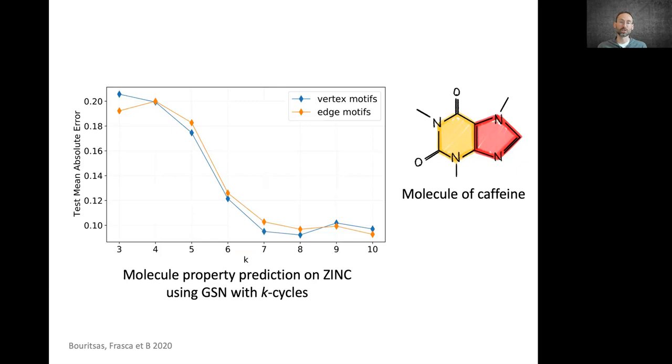It is also a way to incorporate problem-specific inductive bias. For example, in chemistry, we see that cycles are very prominent structures. When we apply this architecture with cycles of certain lengths to classifying the properties of molecular graphs, we are able to predict these properties much better when we are using rings and cycles of size 5, 6, or more.